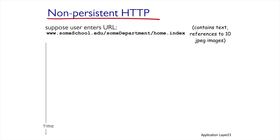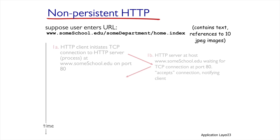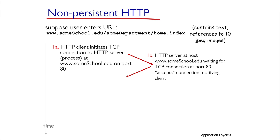What are the stages in non-persistent HTTP communication? To demonstrate that, let's say a client wants to go to someschool.edu and get a page containing 10 pictures. In the first stage, the client types the URL in their browser, which establishes TCP-based communication on port 80 with the server containing the site. The server, listening on port 80, approves the TCP connection and updates the client with the approval.